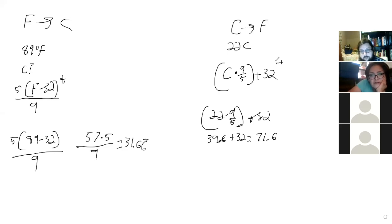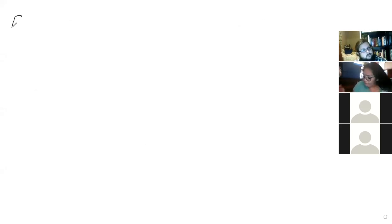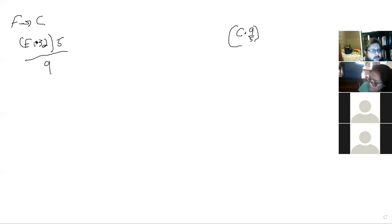Can we do one more converting Celsius to Fahrenheit? Yeah. Two Celsius, that was Fahrenheit minus 32 times five over nine, and then the other one was Celsius times nine-fifths plus 32.